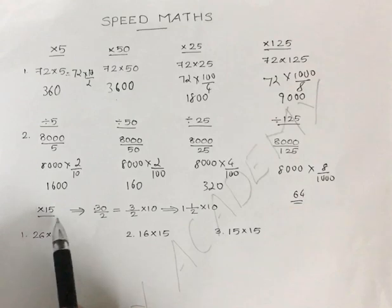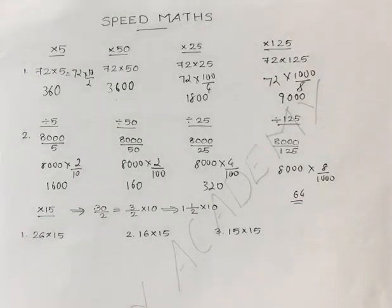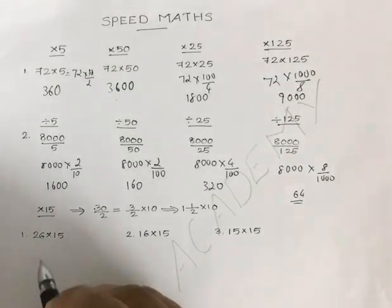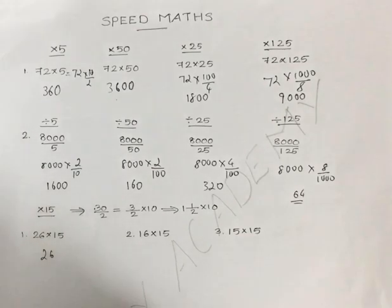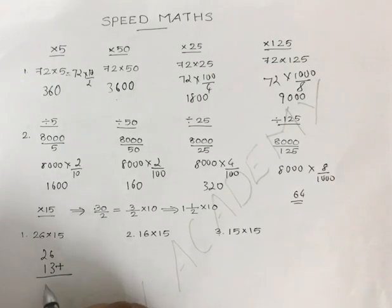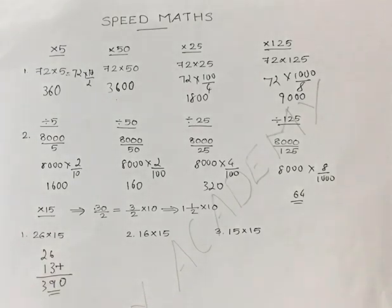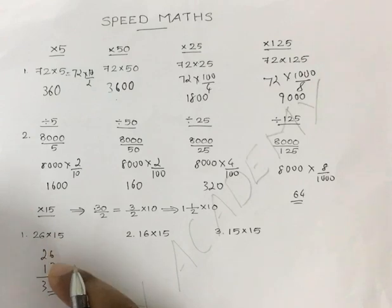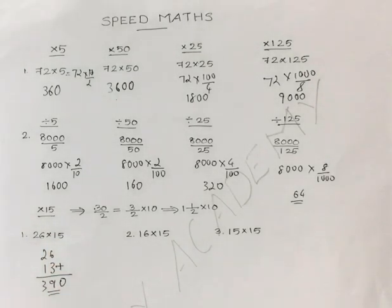Next, multiplication with 15. Whenever you need to multiply 15, one simple procedure — suppose you need to multiply with 26. The half of 26 is 13, you add that too, the answer is 39. You multiply with 10 and you will get the answer. So whenever you need to multiply a number with 15, add half the number to that number itself and multiply with 10.